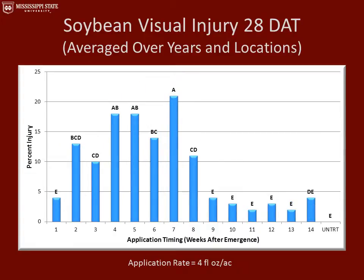This graph represents soybean visual injury 28 days after the application was made. Visual injury is significantly lower at 28 days than we saw at 14 days after the treatments were made. The greatest amount of injury observed at 28 days were weeks four, five, six, and seven, which ranged from 17% to 21% visual injury. After the eight-week application was made, we saw no significant visual injury in the field.